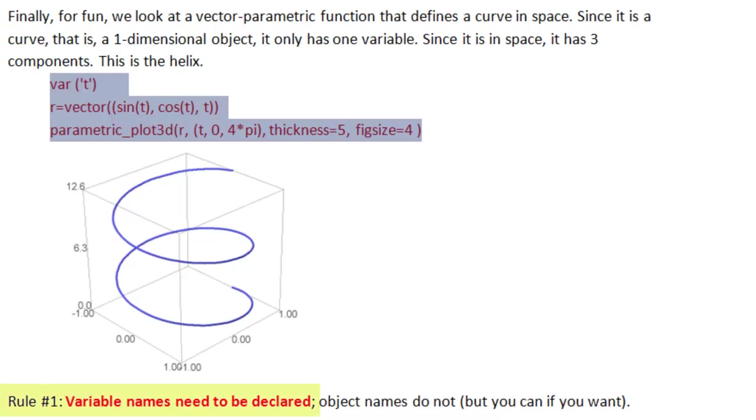So we are good to go with the difference between variable names and object names. And again, the key is rule number one: variable names need to be declared, object names do not. But you can if you want.